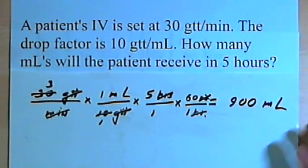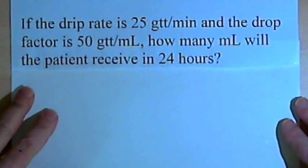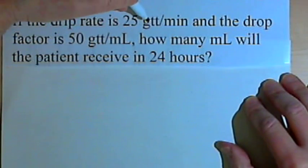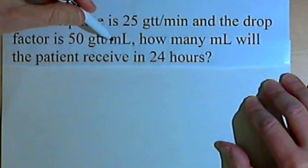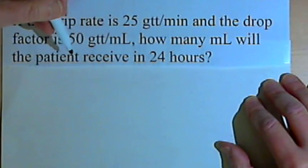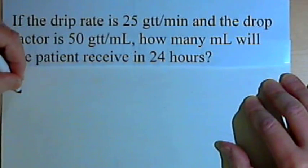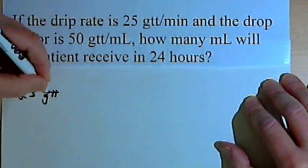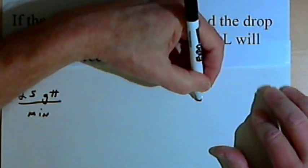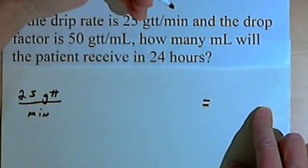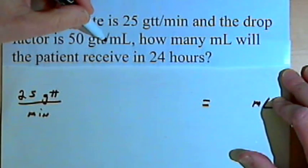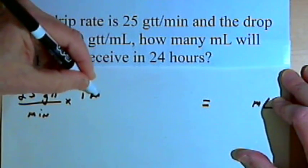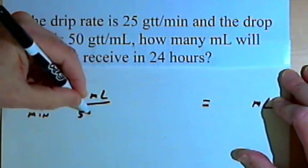Let's do one more. How many milliliters will the patient receive in 24 hours? Once again, I'm going to start out with the drip rate — that's 25 gtt over minutes. I'll put an equal sign and write the unit I want to end up with: milliliters. I've got a drop factor that's 50 drops per milliliter, so I'm going to write that as 1 milliliter over 50 gtt.